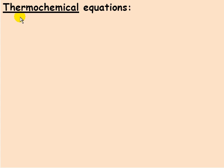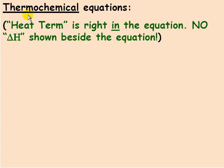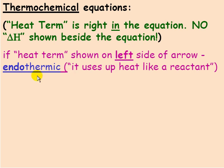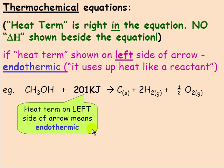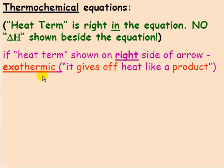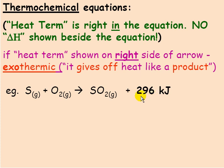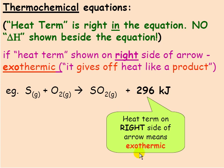Another way of showing heat is through a thermochemical equation — 'thermal' means heat. In these types of equations, the heat term is right in the equation with no delta H shown. The heat term can be on the left or right side of the arrow. If the heat term is on the left side of the arrow, it's an endothermic reaction because heat is used like a reactant. If the heat term is on the right side, it's exothermic — heat is given off like a product.